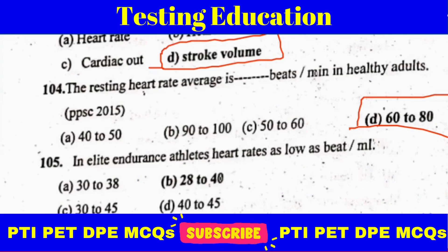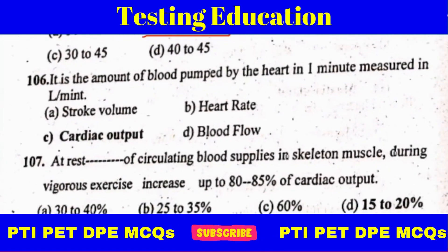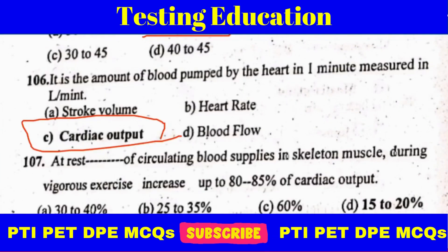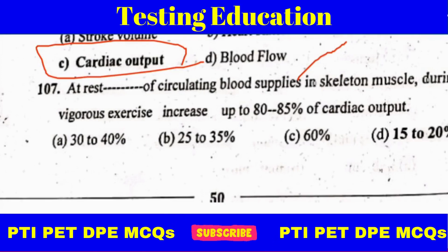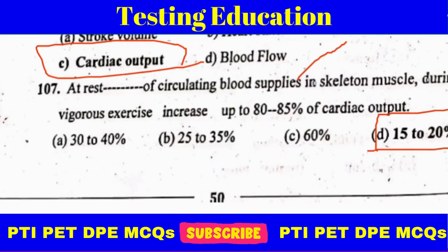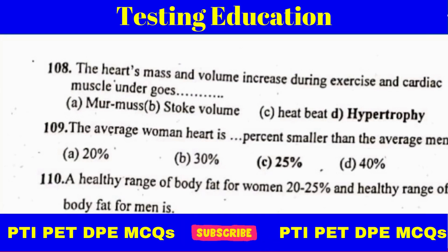In a light endurance athlete, heart rate is as low as 28 to 40 beats per minute. The amount of blood pumped by the heart in one minute, measured in litres per minute, is cardiac output. Circulating blood supply in skeletal muscles during vigorous exercise increases up to 80 to 85% of cardiac output, compared to 15 to 20% at rest. The heart mass and volume increase during exercise and cardiac muscles undergo hypertrophy.